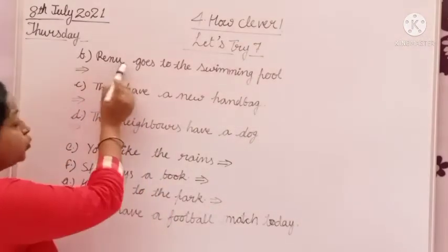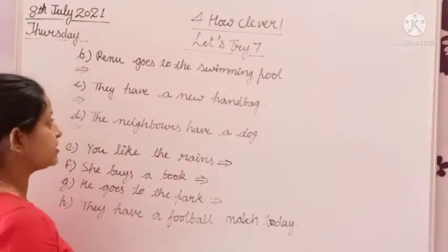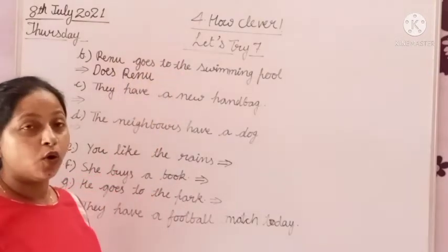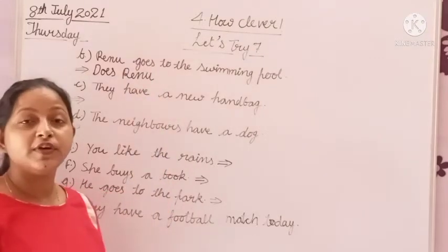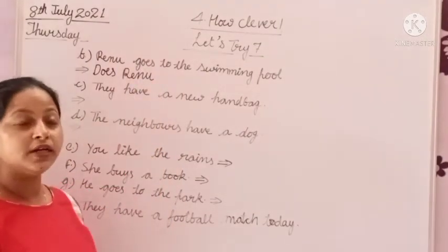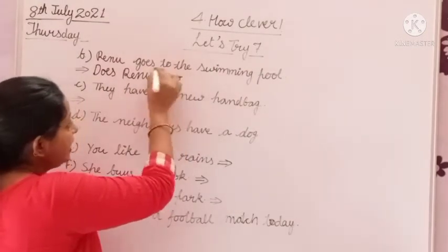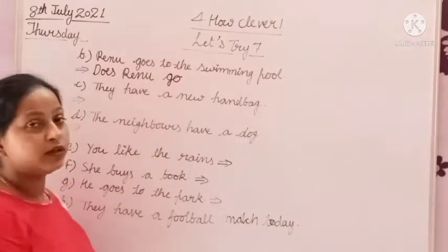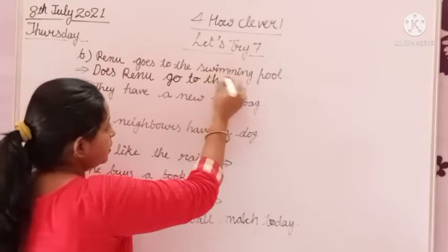So where is the subject? Renu. Renu is the subject and Renu is a singular noun. That's why we will use does. Does Renu — and we will write the remaining sentence using the first form of verb. We use go without -es. We will remove -es from 'goes'. Does Renu go to the swimming pool?